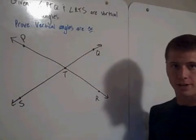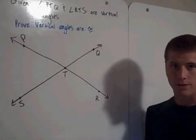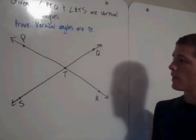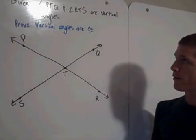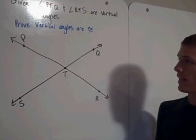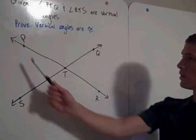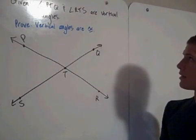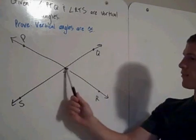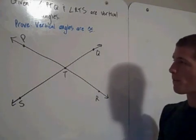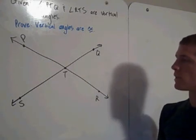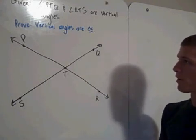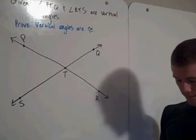We want to prove that vertical angles are congruent. Here in this diagram, we're given that angle PTQ and angle RTS are vertical angles. So we need to prove that they're congruent.